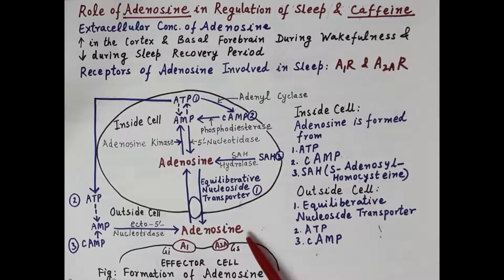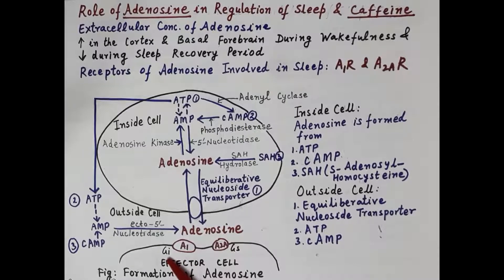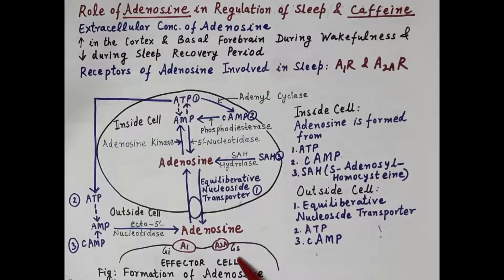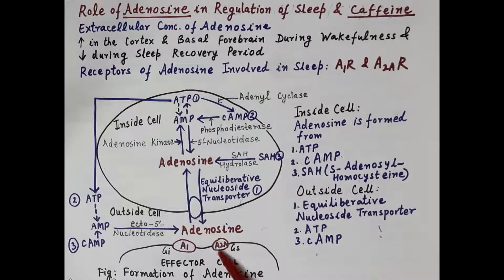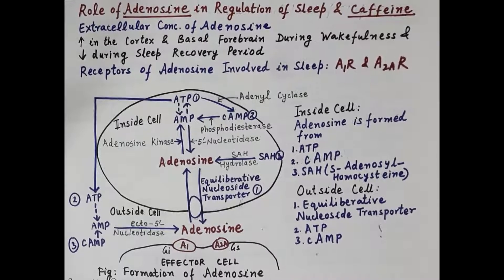Adenosine binds to its A1 receptor, which is an inhibitory G-protein-coupled receptor, and to its A2A receptor, which is a stimulatory G-protein-coupled receptor, inducing sleep. The adenosine A2A receptor has a predominant role in the induction of sleep compared to the A1 receptor.